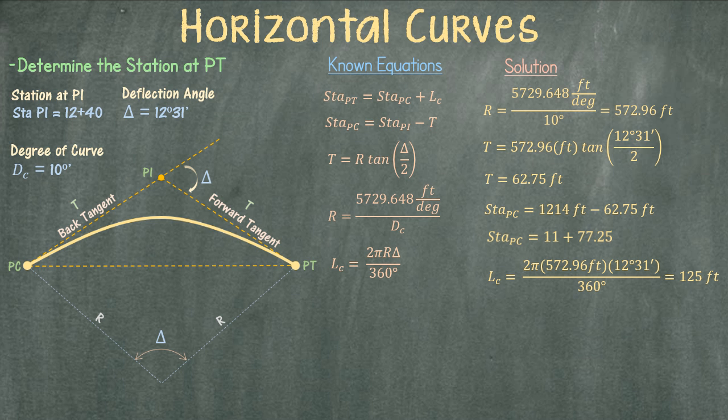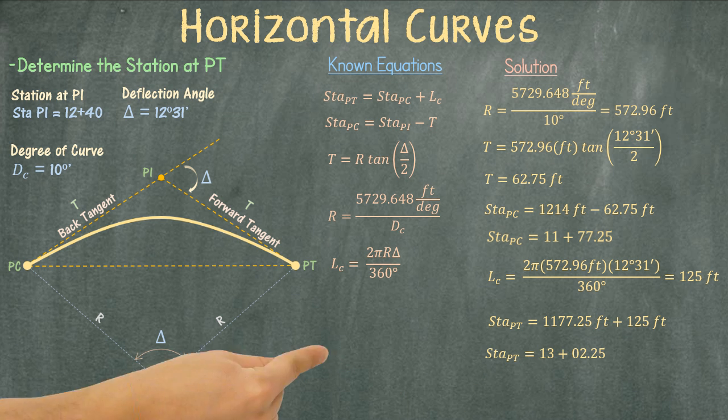Finally we can determine the station at PT by adding the length of the curve to station PC. We find that the station at PT is equal to 13+02.25.